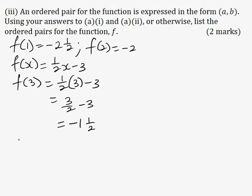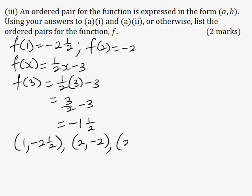Now I can write the ordered pairs. When x = 1, f(1) = -2.5, giving (1, -2.5). When x = 2, f(2) = -2, giving (2, -2). And when x = 3, f(3) = -1.5, giving (3, -1.5).